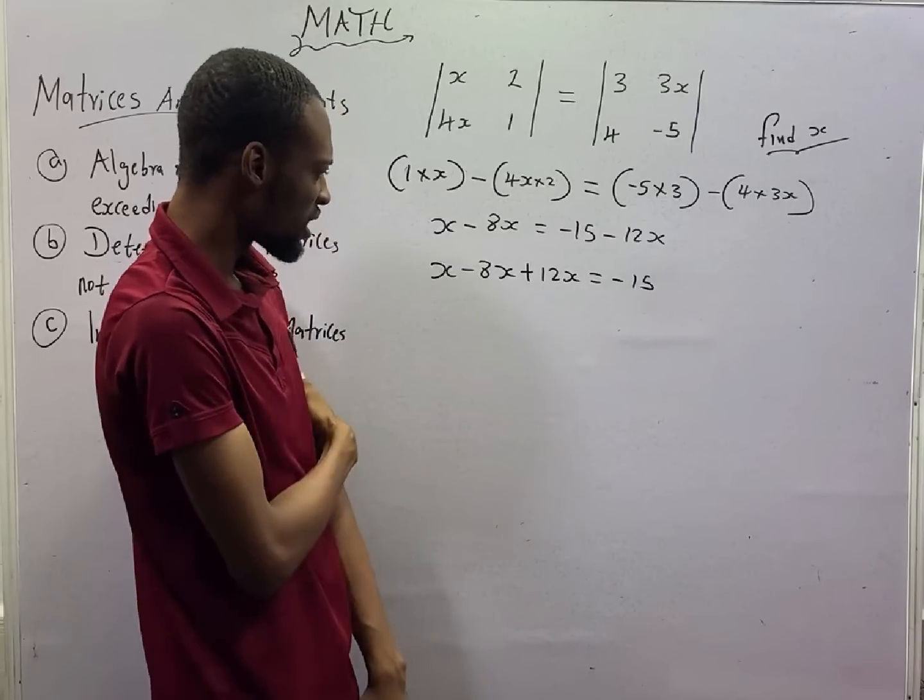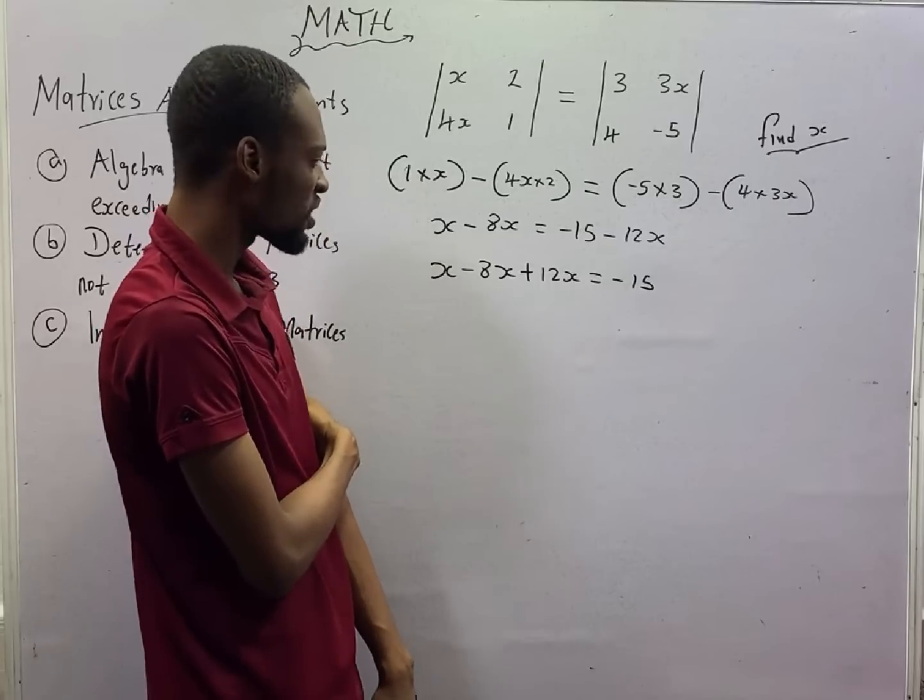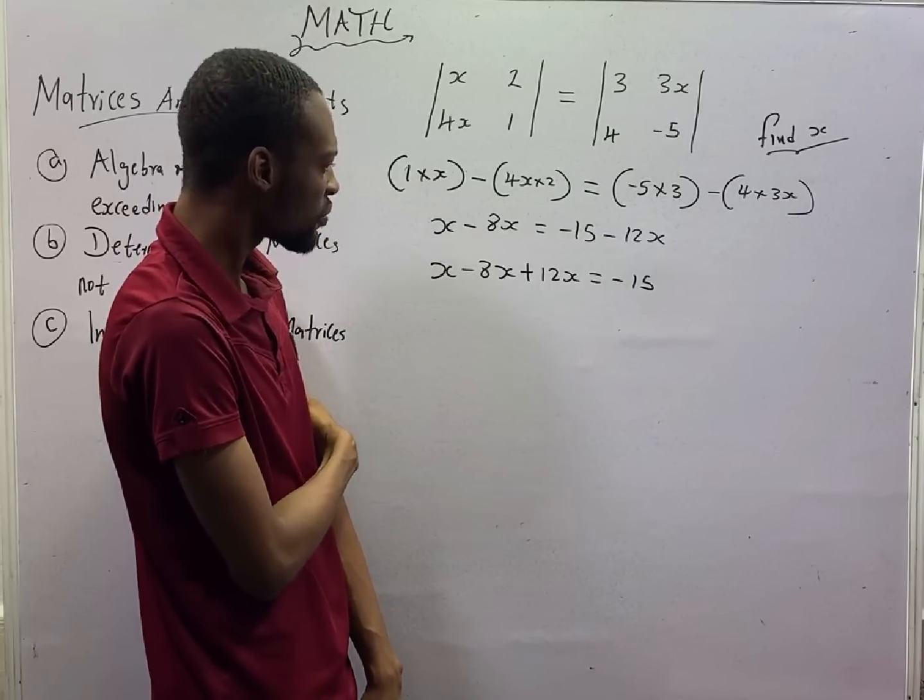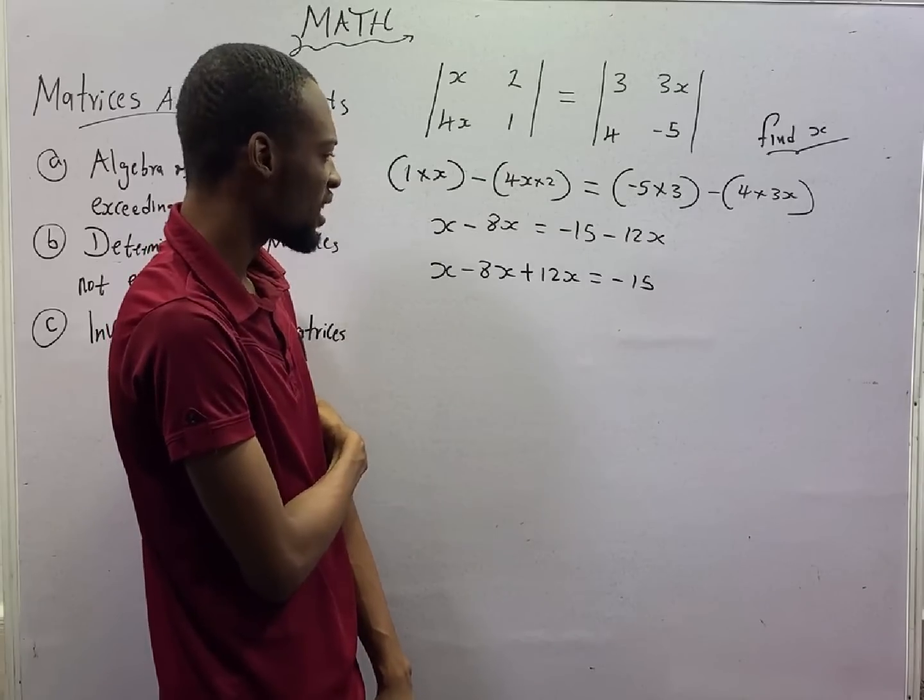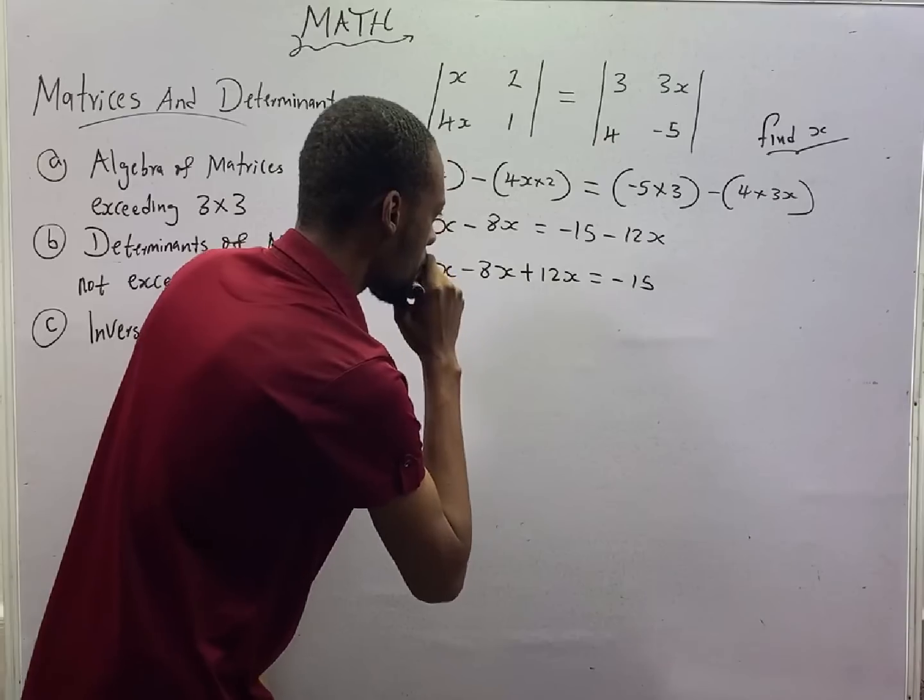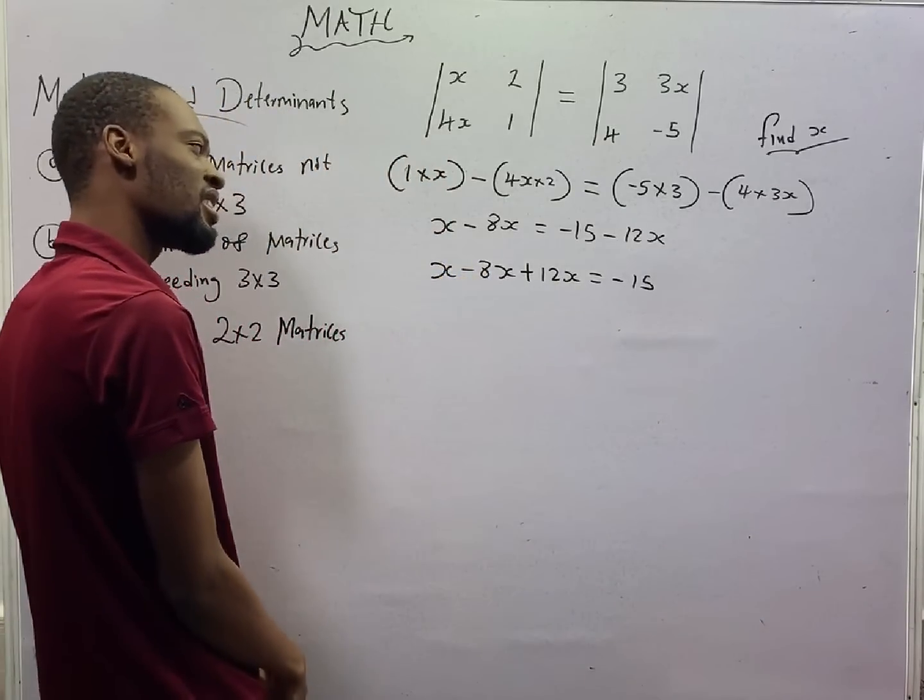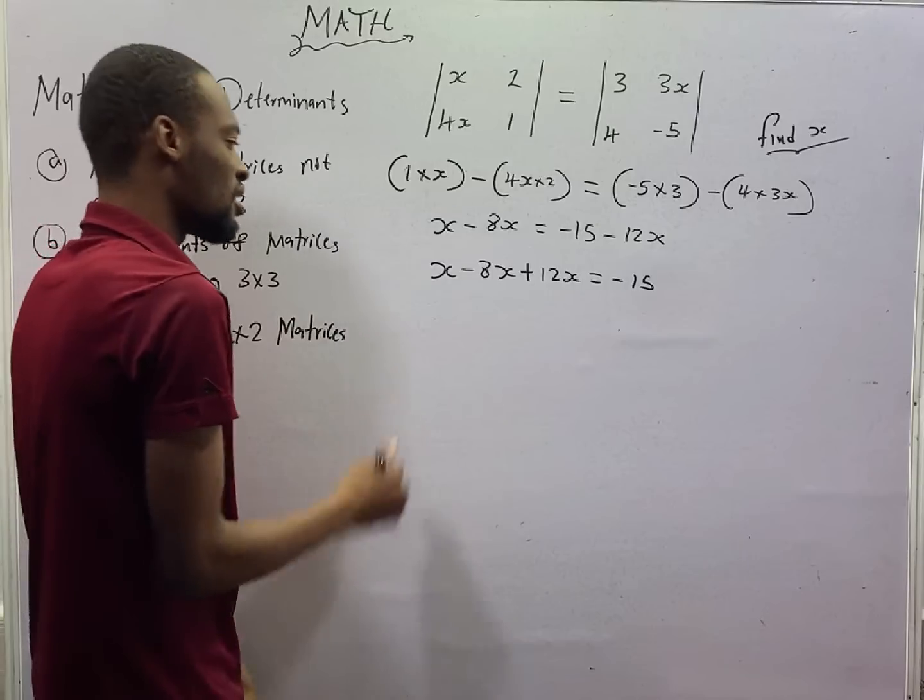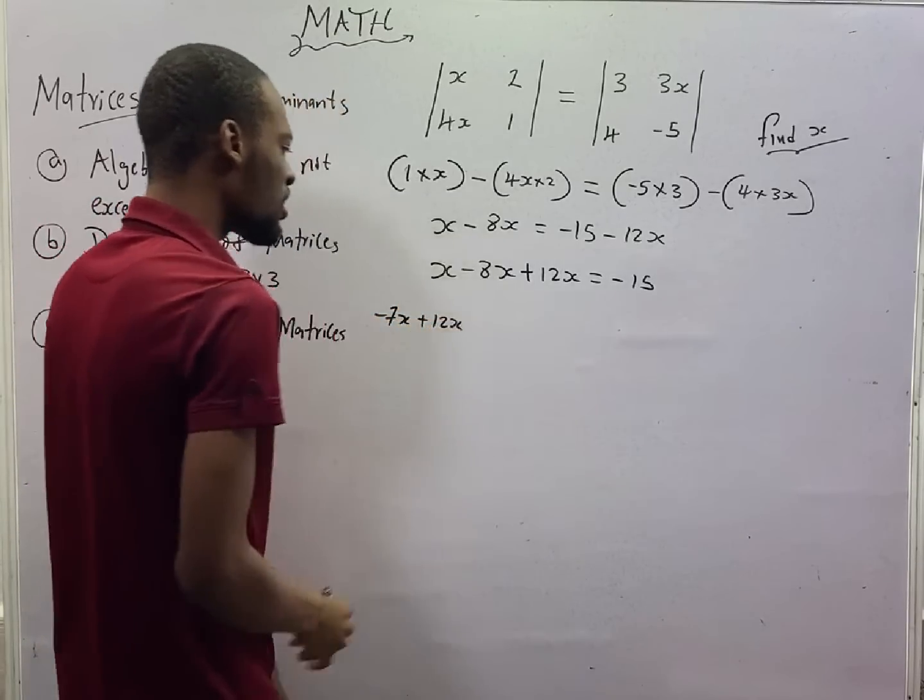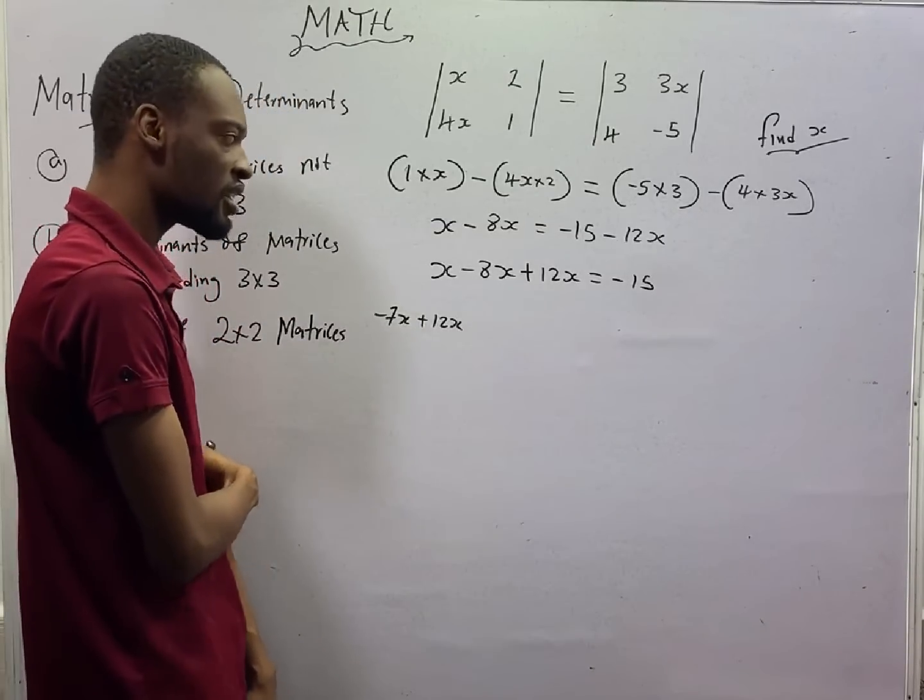S minus 8S, that should give us minus 7S. S minus 7S plus 12S. That answer is not looking good, but you have S minus 8S, that is minus 7S, minus 7S plus 12S. It is the same thing as 12 minus 7 and that should give you 5.